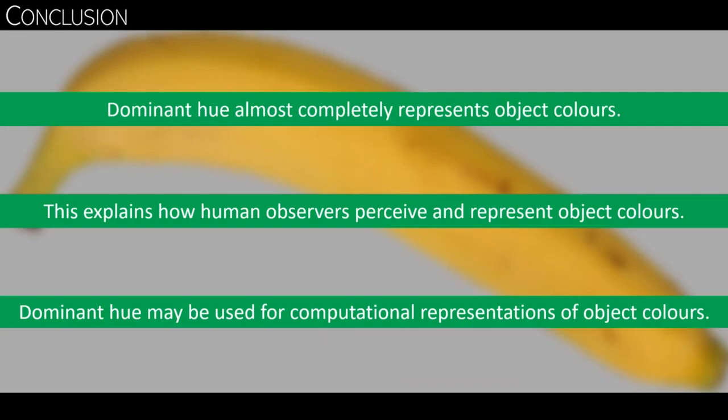Taken together, our results show that for many objects, the hue variation away from the dominant hue is negligible. This is partly because the small hue variation in such objects is barely visible and partly because observers focus on the dominant hue and neglect variation away from the dominant hue. This implies that the dominant hue is pretty much representative of the full color distribution. And these results explain how human observers perceive and represent the colors of objects.